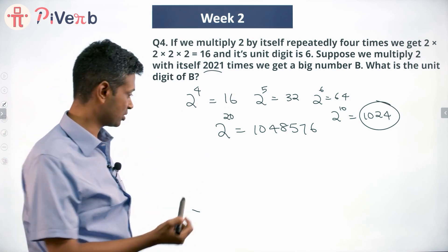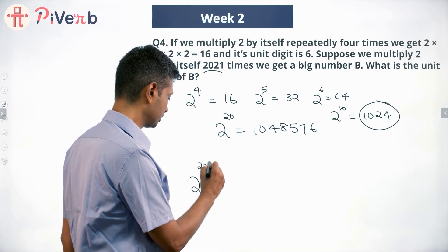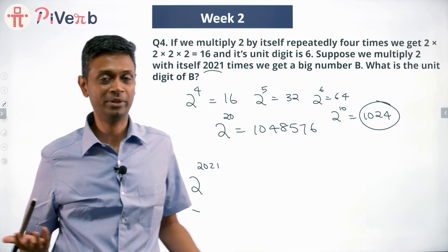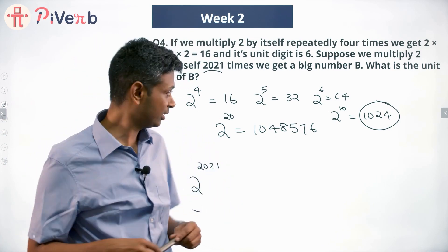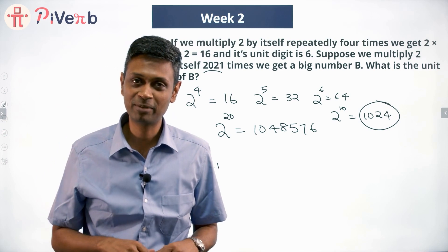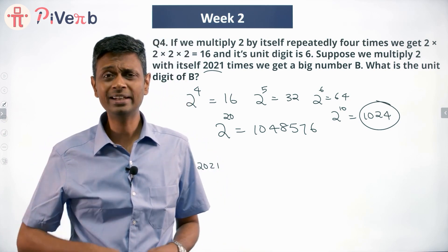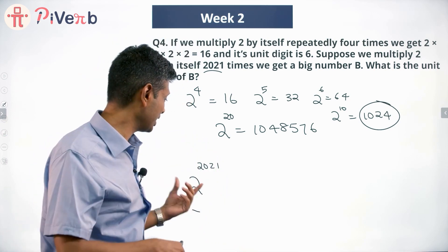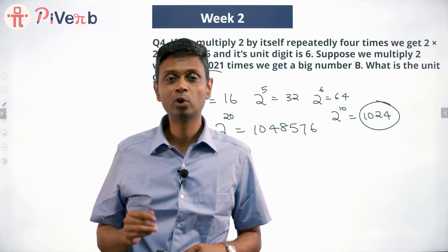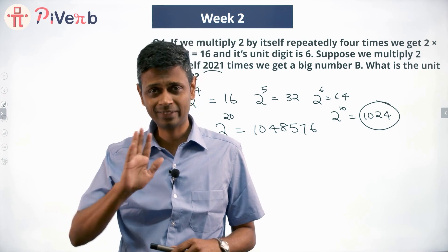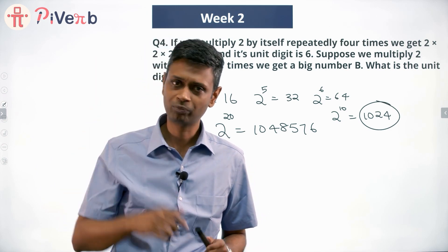We cannot sit and find 2 raised to the power 2021 by repeated multiplication — that's not happening. So, 2 raised to the power 2021: how do I do that? Anytime you are given such a large number, you say: 2^2021 I cannot find directly, but 2^1, 2^2, 2^3 I can find. Let me find what I can find and go from there.